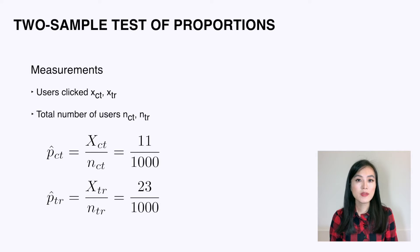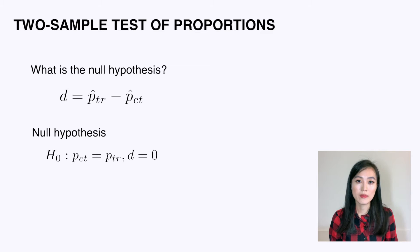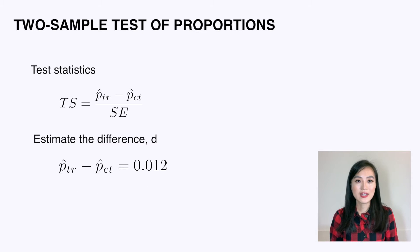Similarly, we get p_treatment_hat as 2.3%. We want to estimate the difference between p_control and p_treatment, which I'll call d. Under the null hypothesis, p_control and p_treatment are the same — in other words, d, the true difference, equals zero — and we'd expect our estimation d-hat to be normally distributed with a mean of zero. We don't know its standard deviation yet and need to estimate it.